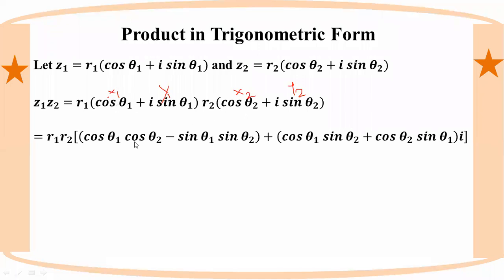The product formula gives us: cos(θ1)·cos(θ2) minus sin(θ1)·sin(θ2) for the real part, and cos(θ1)·sin(θ2) plus sin(θ1)·cos(θ2) for the imaginary part.